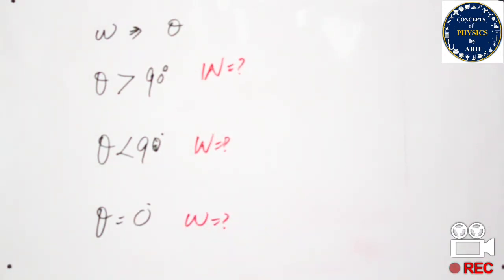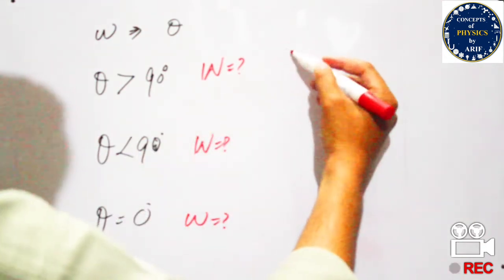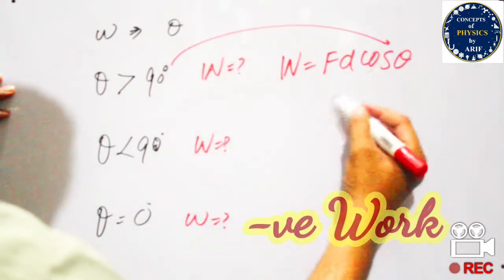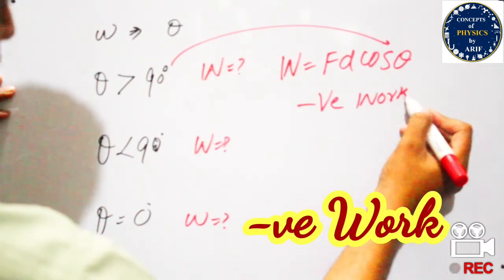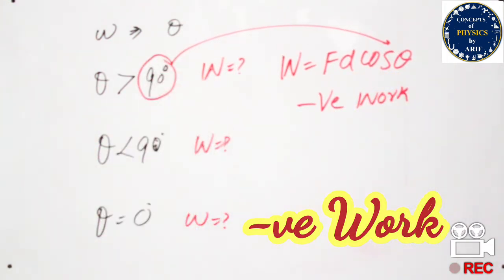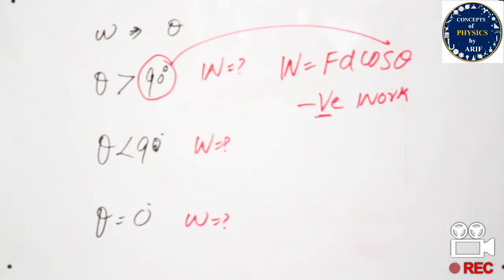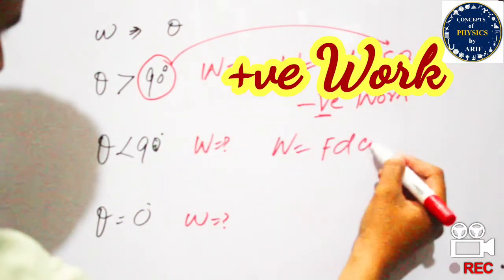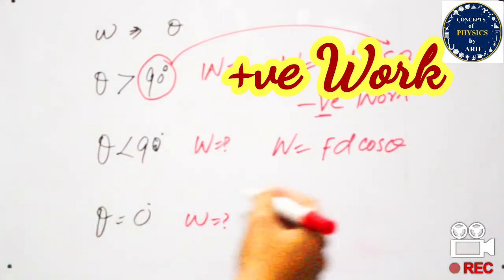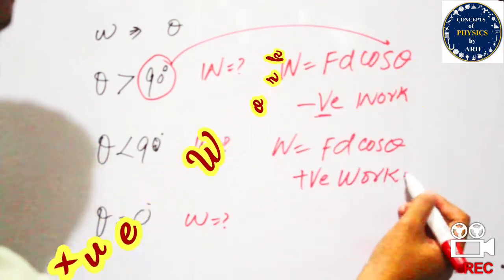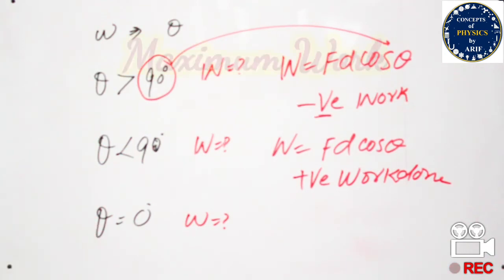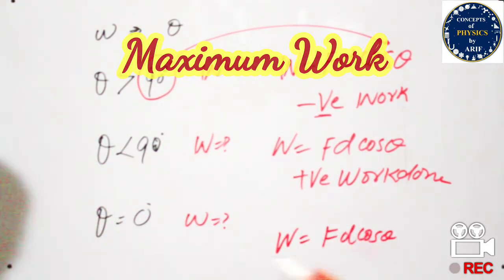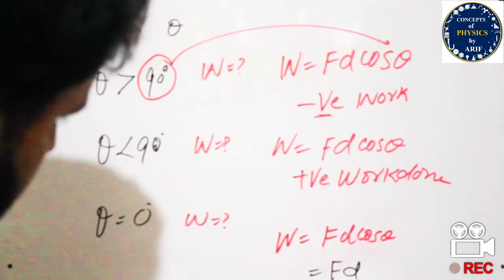If theta is greater than 90 degrees, W = F D cos theta gives a negative value, so we get negative work done. If theta is less than 90 degrees, cos theta gives a positive value, so positive work is done. If theta is equal to 0 degrees, then W = F D cos 0 = F D, since cos 0 = 1, and maximum work is done.